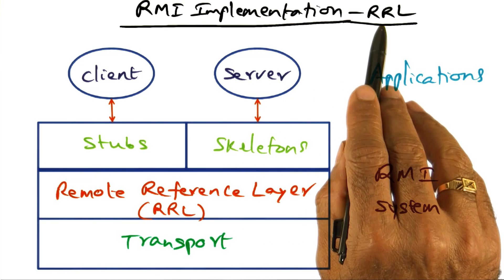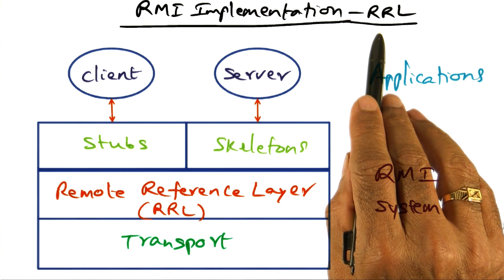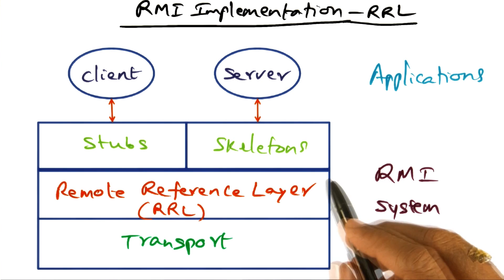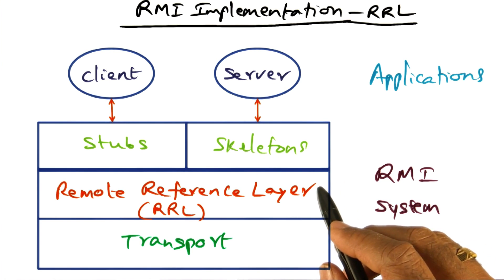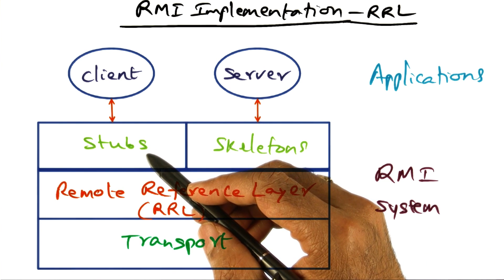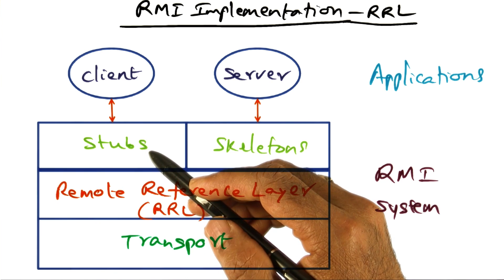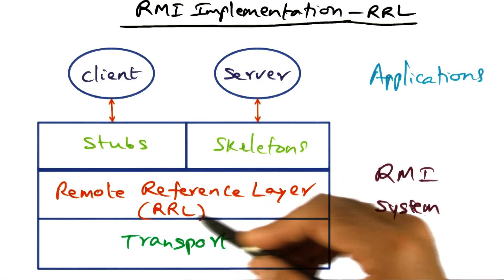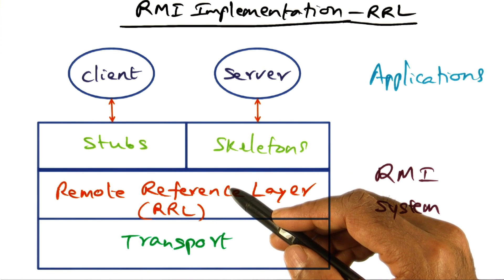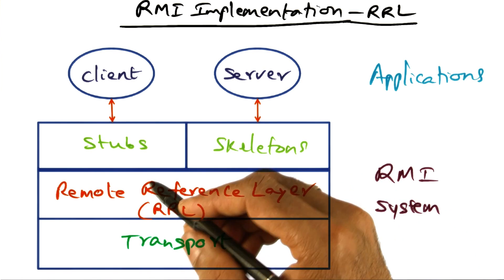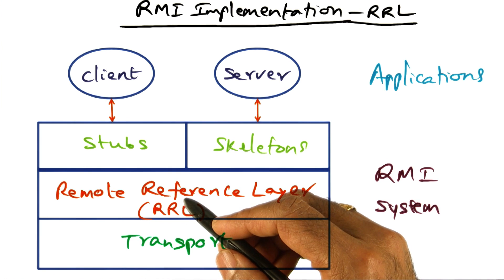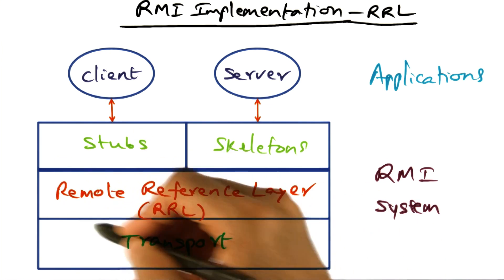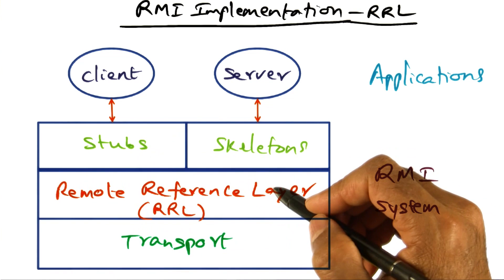At the core of the RMI implementation is a layer called the Remote Reference Layer, or RRL, and that's the place where a lot of magic happens. The client-side stub initiates a remote method invocation call using this remote reference layer, and all of the magic with respect to marshalling the arguments in order to send them over the network is handled entirely by this remote reference layer.